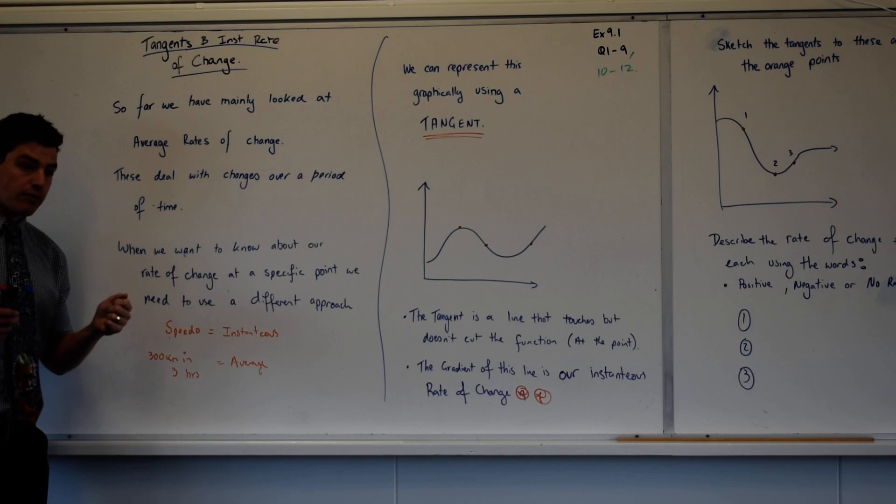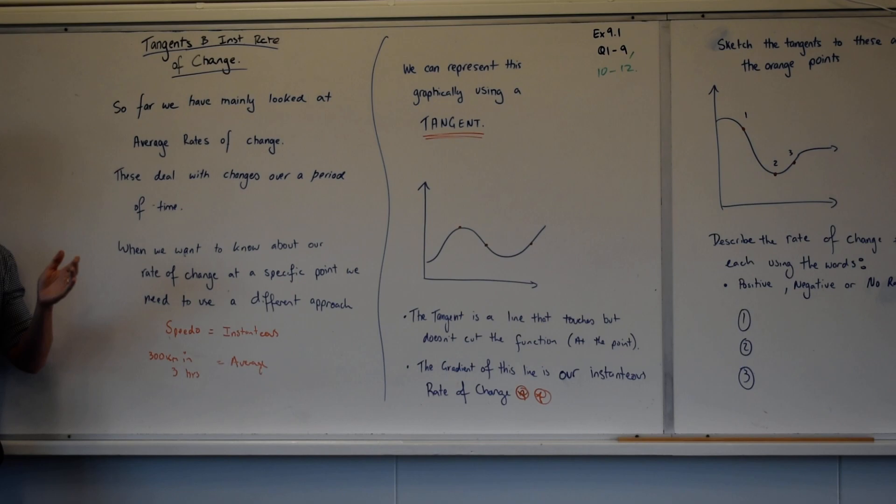If you need an example that helps think about that, when I'm driving along and I look down at my speedo, that's my instantaneous rate of change. So that tells me what speed the car is travelling at that point in time.